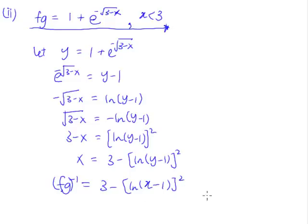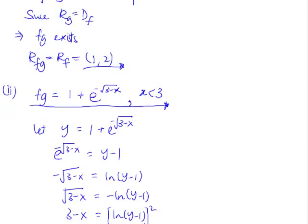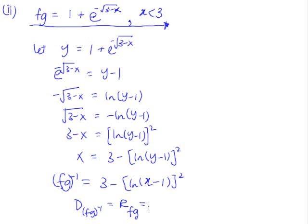And of course, we need to determine the domain. The domain of our fg inverse is actually the range of our fg. And the range of our fg, we actually got it up here in part 1's answer. So the range of fg is from 1 to 2. And therefore, we know that the domain for this inverse function will be from 1 to 2, excluding 1, excluding 2.